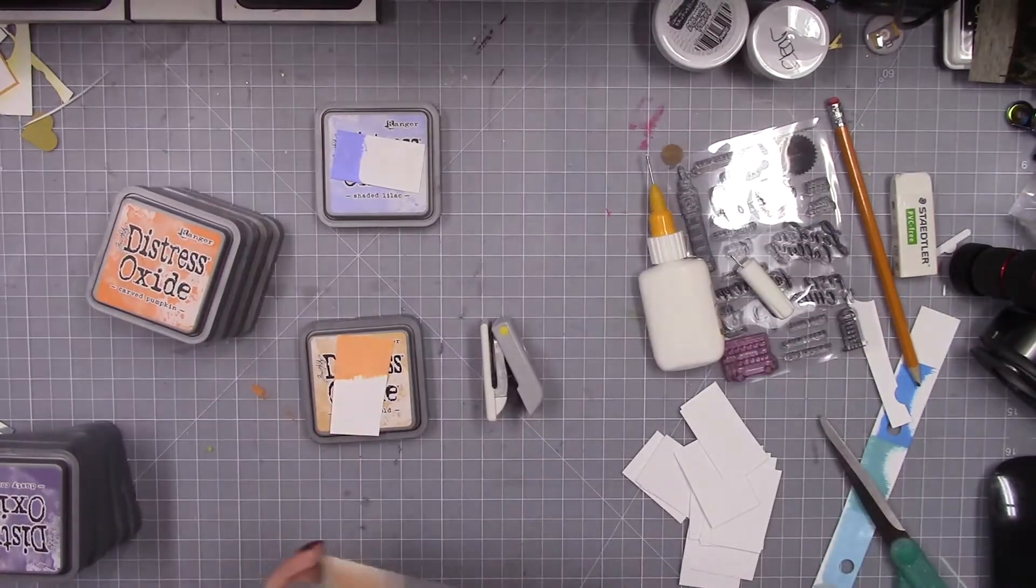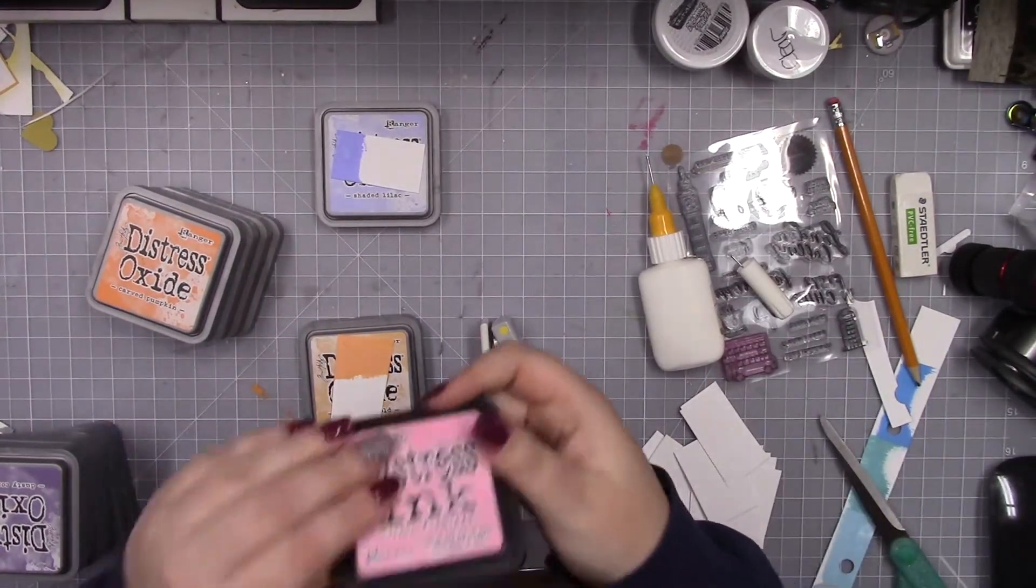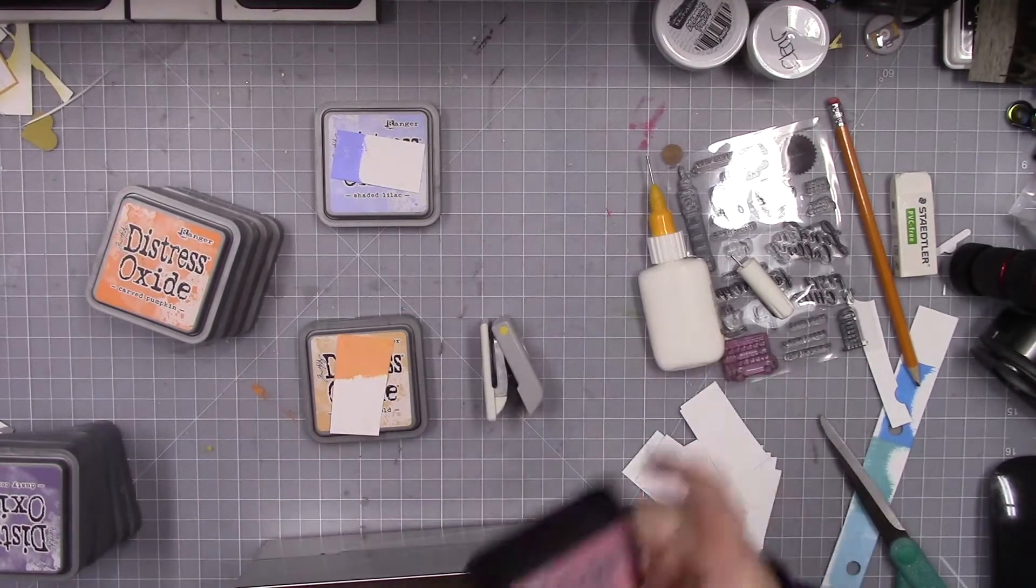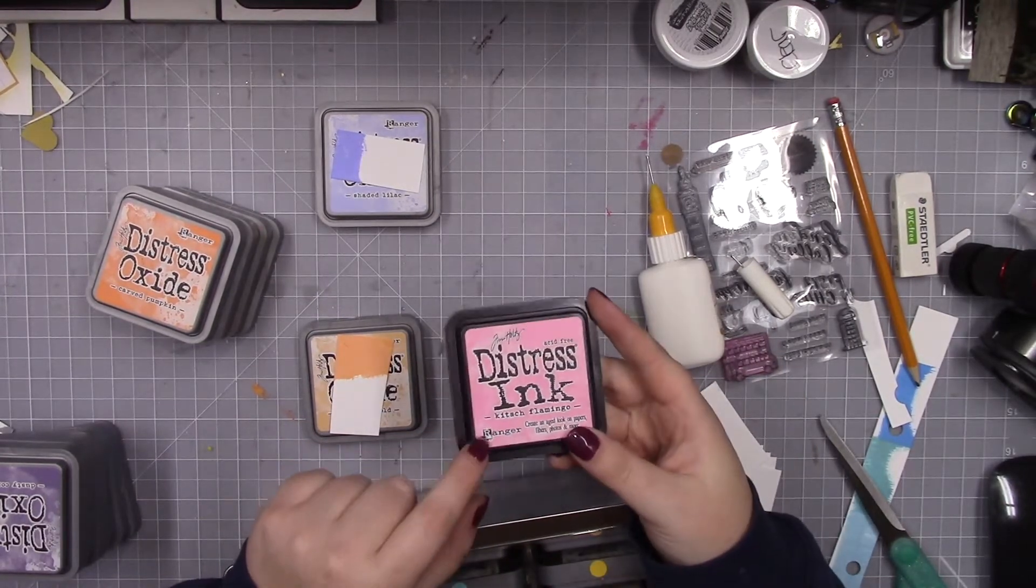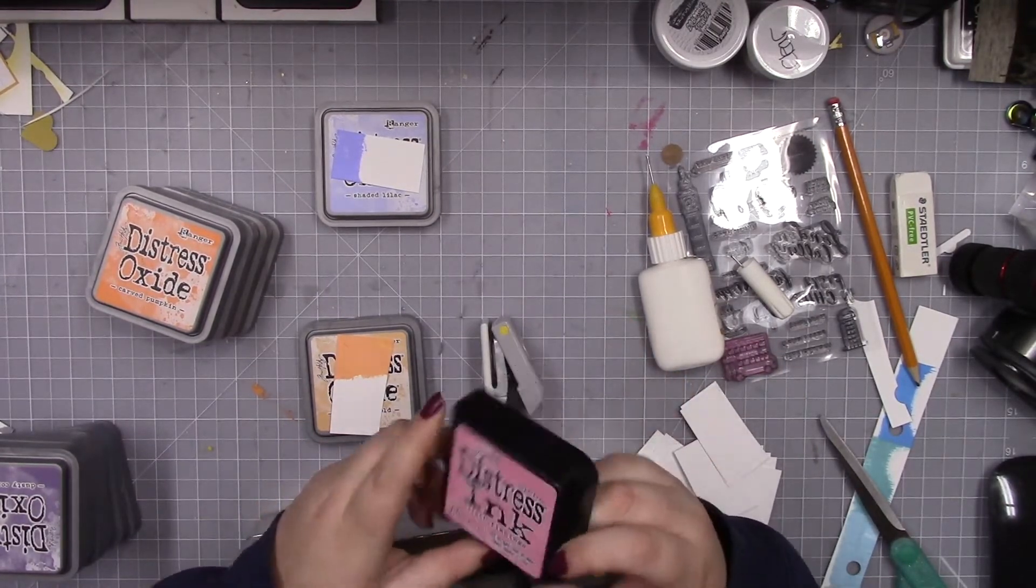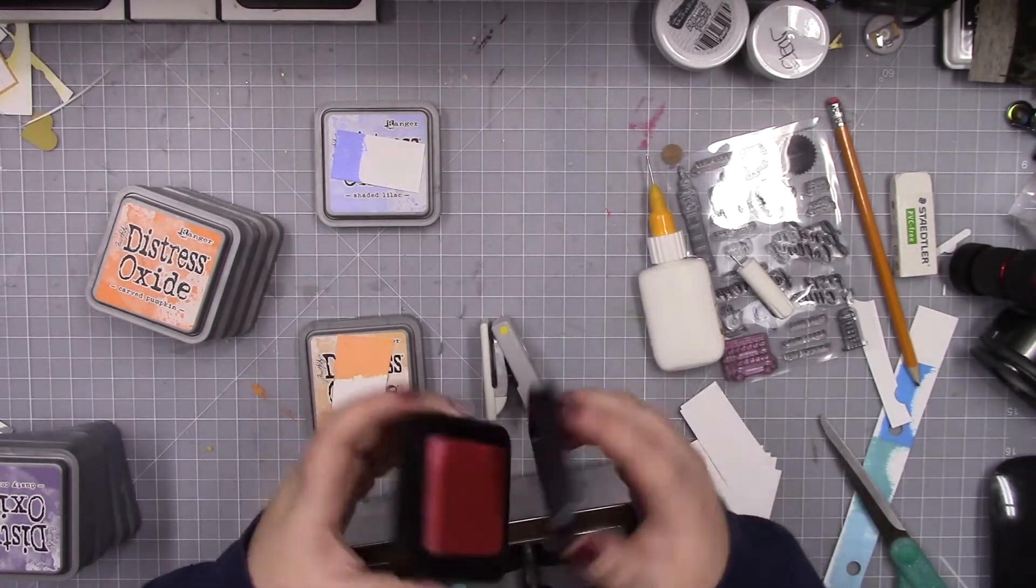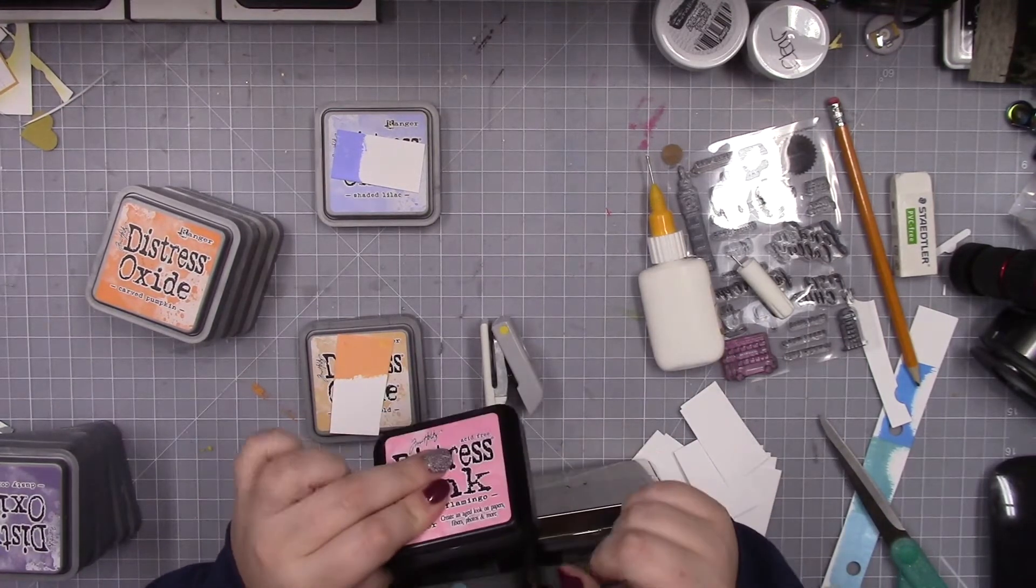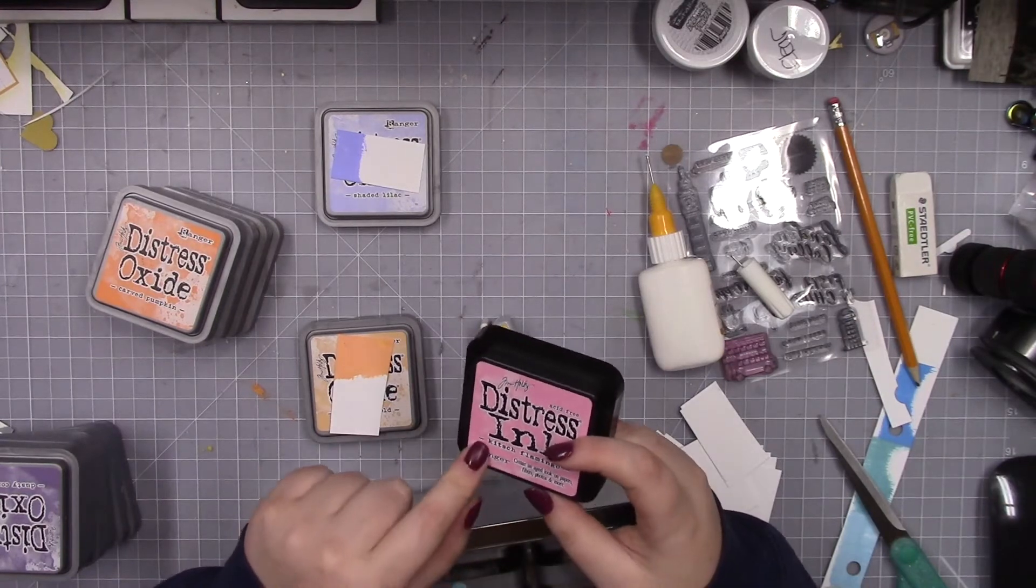the full-size ink pads. They also fit the distress ink ones. These are all oxide. This is the only one that I have in distress ink in the big size—it's one of the new colors. I might get all of them in the big size eventually.